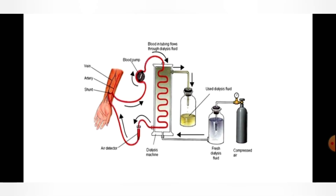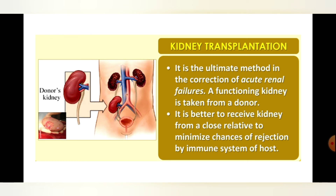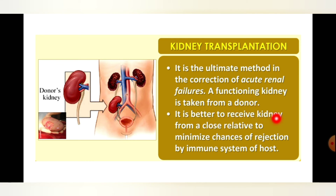If the kidney is still too damaged and in the last stage, dialysis is not enough — the definitive treatment is kidney transplantation. A functioning kidney is taken from a donor and transplanted to the patient. It is the ultimate method for correction of acute renal failure.